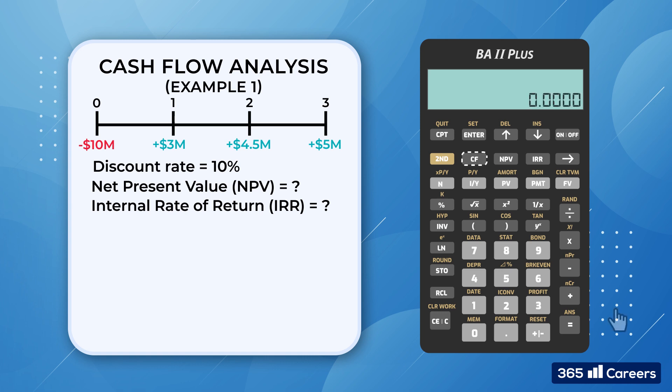We press the CF button. The first thing we see on the screen is CF0. This is the initial cash flow. As you can see, there is already a value that we have. So before we start entering data, we need to clear the calculator's memory registers by pressing 2nd, clear work.